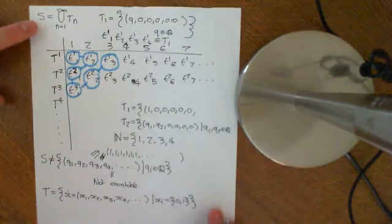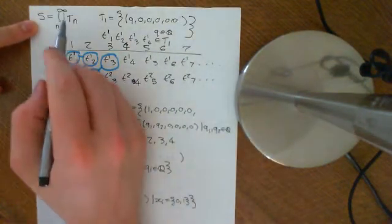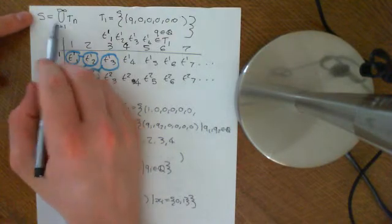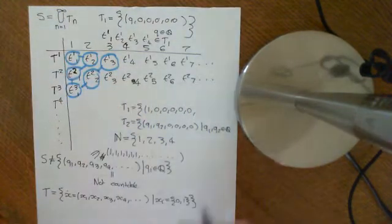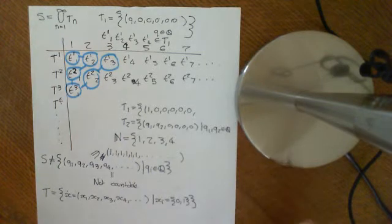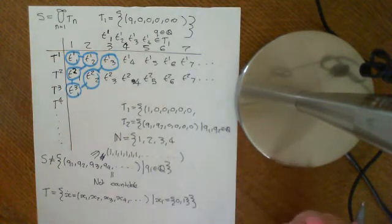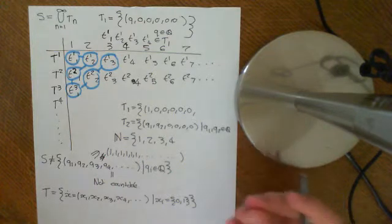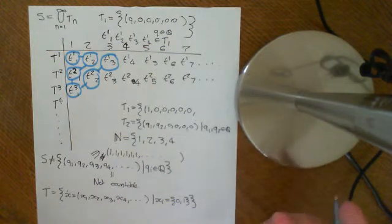The reason being that if you are an element of the set S, you must be in one of the TNs, because the set S is the union of all the TNs. So you must be in a set TN. But if you're in a set TN, that means that you have a last term, basically. And after that last term, after that nth term, all the terms in the sequence are 0s.